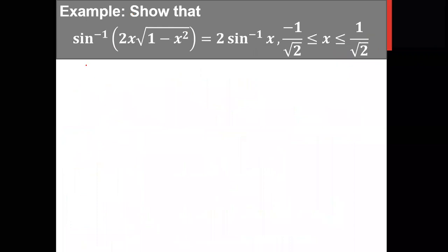This next identity is also important — they ask either tan inverse x plus tan inverse y or this one: sin inverse of 2x times square root of (1 minus x²) equals 2 sin inverse x. If you have any doubt, please put it in the chat box.